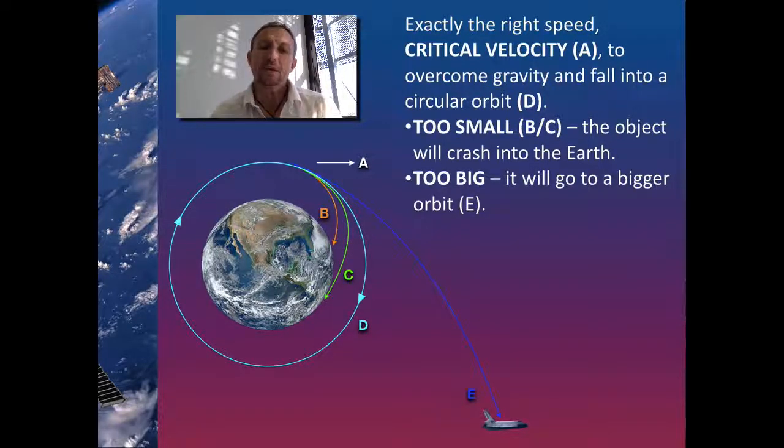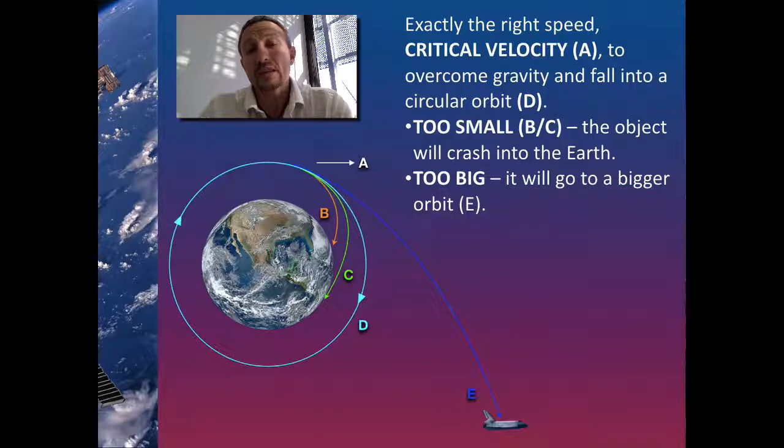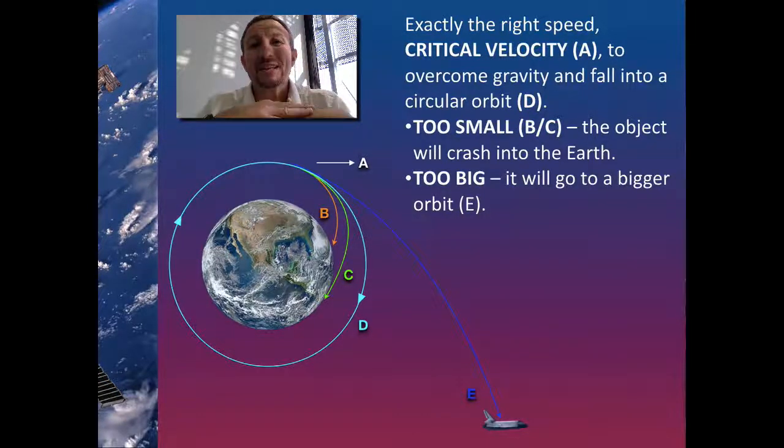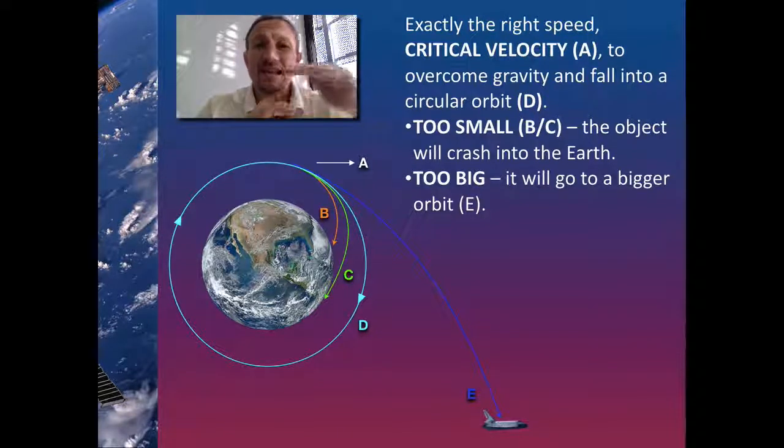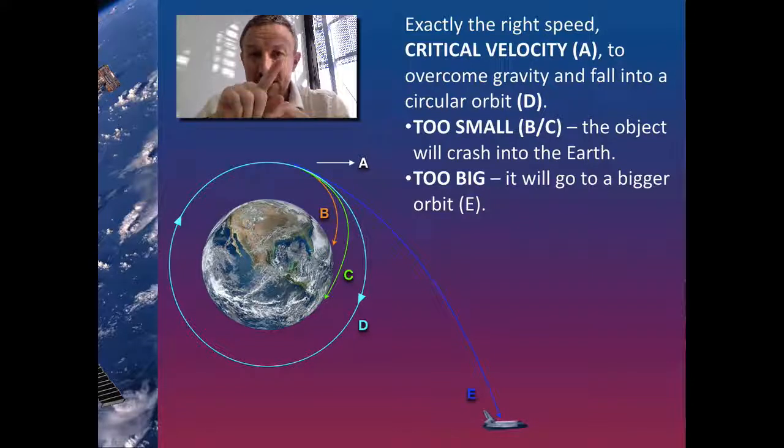The result is it will either make a bigger orbit and as a result might be lost or it might actually just go hurtling out into space because gravity hasn't got enough of a strength to tether it and hold it in place. So when you think about companies like ESA, the European Space Agency or NASA, when they're putting up satellites into space, we've got to take this into account.